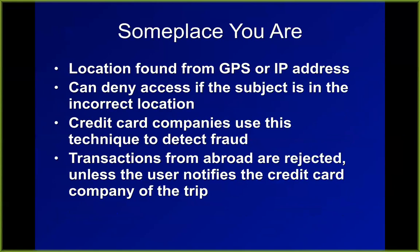Geolocation — type 4 authentication, where you are — is nice because it can be collected effortlessly without the user having to carry around an RSA token. You just let them log in and look at their IP address, or if they're using a phone with GPS you see where they are. If they're trying to make a purchase at a store, you see if the device making the purchase is physically in that store. If it's not, it's some hacker that stole their password. If it is, then it's a second factor of authentication.